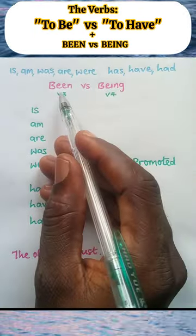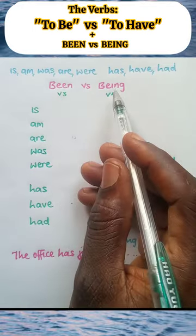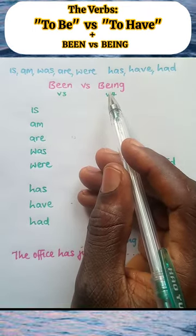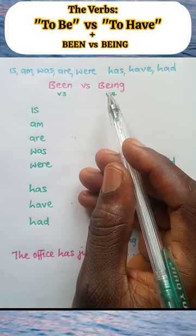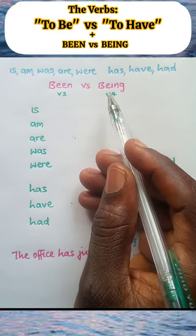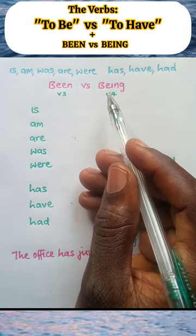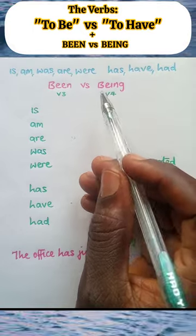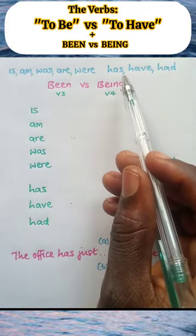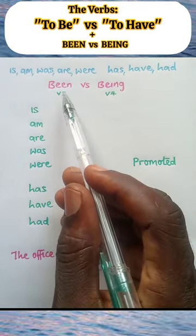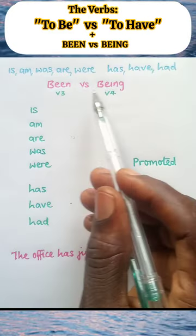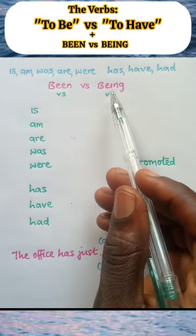As a past participle verb and as a present participle verb, wherever they appear in sentences as verbs, they are always preceded by primary auxiliary verbs. And here we want to consider which of these primary auxiliary verbs precede being and which ones precede been in sentences.